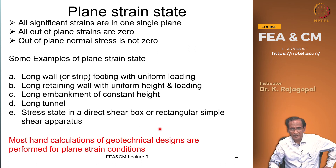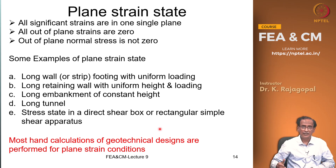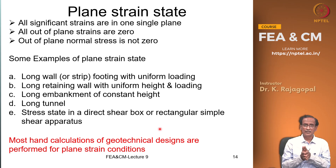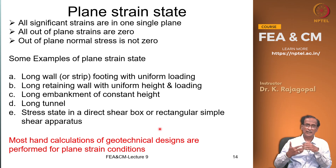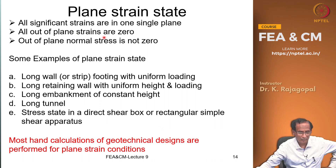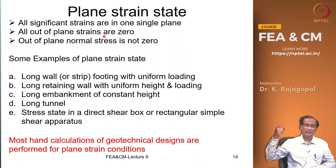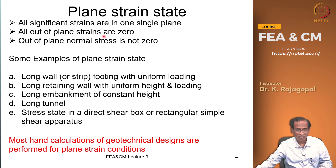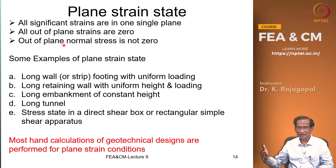Similar to plane stress, we have the plane strain case where all significant strains act within one plane. If xy is the plane of analysis, we have ε_xx, ε_yy, and γ_xy; all out-of-plane strains are zero — ε_z = 0, γ_yz = 0, γ_xz = 0. However, the out-of-plane strain being zero does not mean the out-of-plane stress is zero — it depends on the Poisson's ratio.